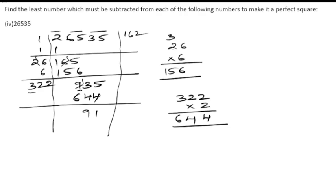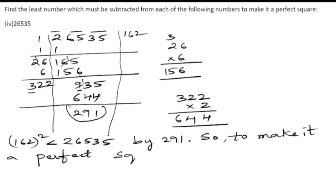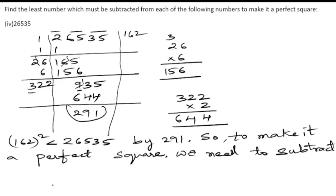Subtract 165 - 156 = 9; bring down 35 to get 935. Write 6 again: 26 + 6 = 32. In the 32-table, nearest to 935 is with 2 (not 3): 322×2 = 644. Subtract: 935 - 644 = 291. The remainder is 291. So 162 squared is less than 26535 by 291. Therefore, to make it a perfect square, we need to subtract 291 from 26535.